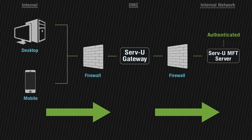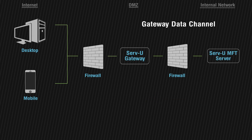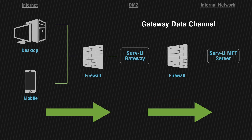Once the client is approved, Servview opens a new connection to Servview Gateway called the Gateway Data Channel. Gateway now binds the incoming client connection to the new Gateway Data Channel created specifically for this connection. This allows data transfer to occur safely between the FTP client and Servview file transfer server.